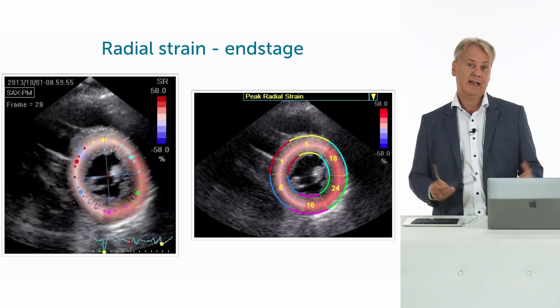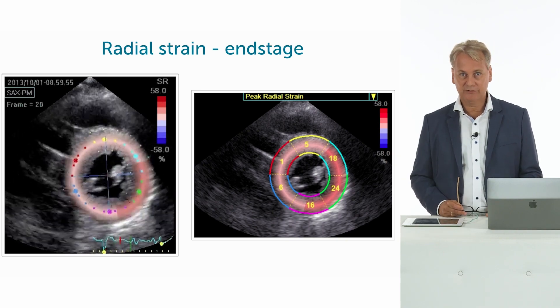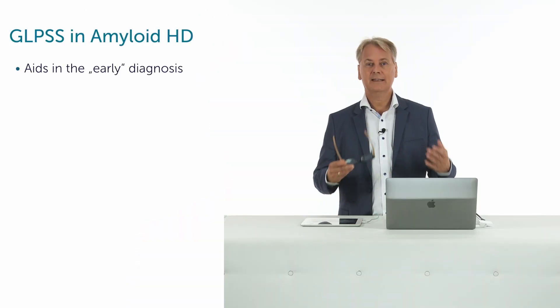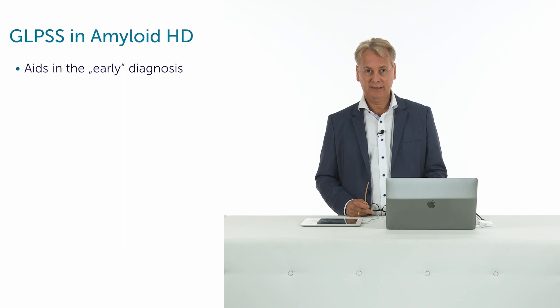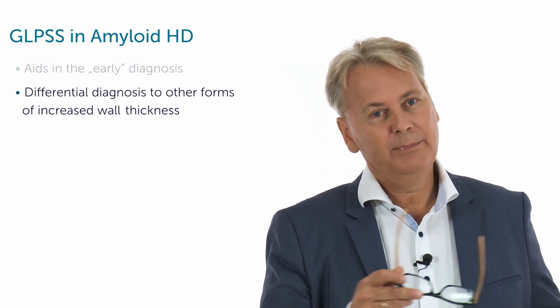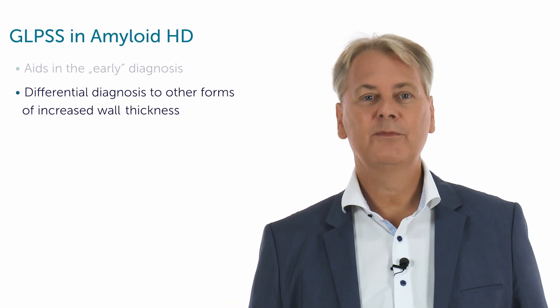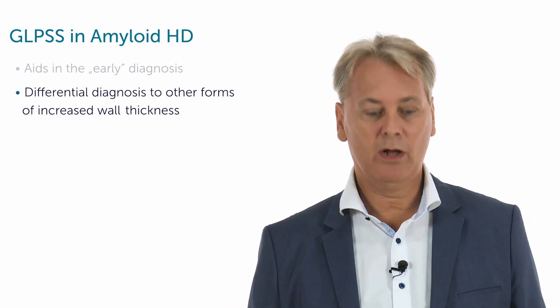These patients, as you will well understand, have a very poor prognosis. So in summary, where can you use speckle tracking in the setting of amyloid heart disease? First, to detect amyloid heart disease in an early stage. We can use it to help differentiate between other forms of increased wall thickness.